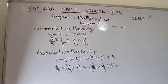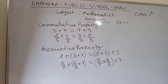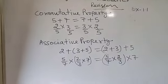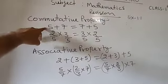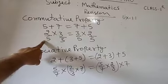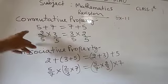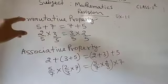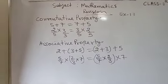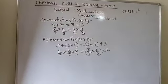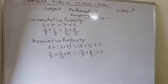Commutative property and associative property will only be followed in rational numbers in the case of addition and multiplication. They do not apply in the case of division and subtraction.